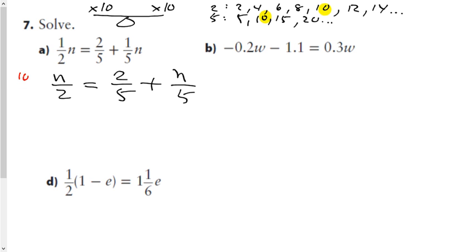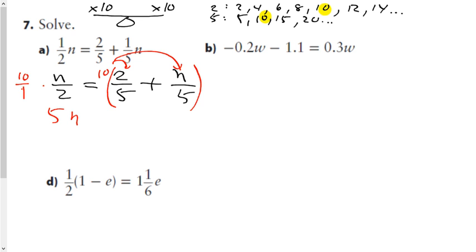I'm going to take the left side, which is just the one term, and multiply by 10. I'll put brackets around the right side to remind myself that both terms must be multiplied by 10. For half of n multiplied by 10: I can multiply numerators to get 10n divided by 2, which gives 5n. Or I can cross-reduce: 10 over 2 reduces to 5 over 1, giving 5n.